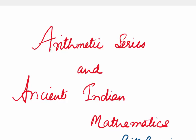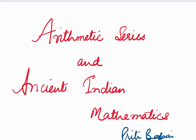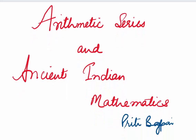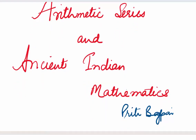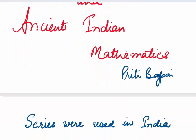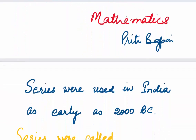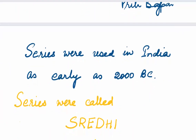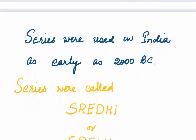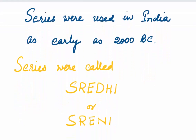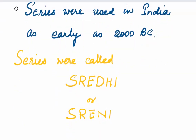Series are not new to mankind. Around 1550 BC, the Egyptians and Greeks were all using series. They had their own names — Greeks called them 'ecthesus', which meant 'setting forth'. In India, series were used as early as 2000 BC. They were called 'shridhi', a Sanskrit word which means succession of distinct things or progression. It was also called 'shridhi', which meant a row or a line.